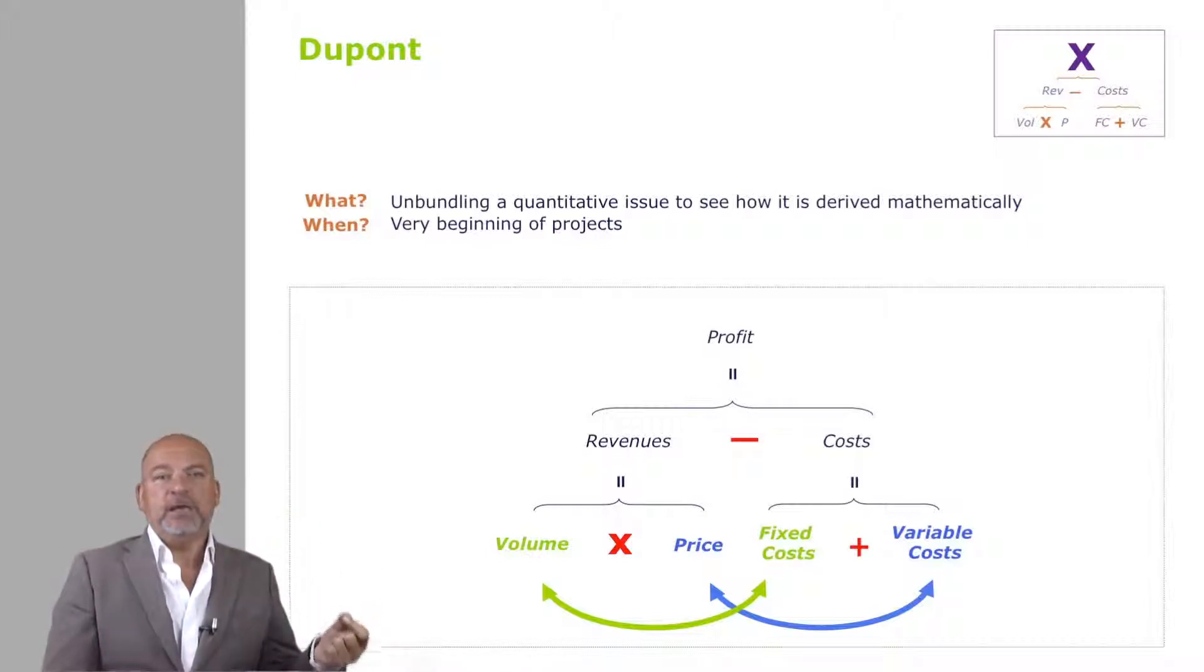So the only thing you care about is volume. So fixed costs and volume move together, and price and variable costs move together.